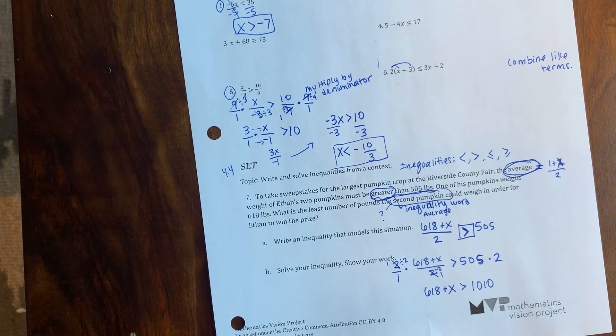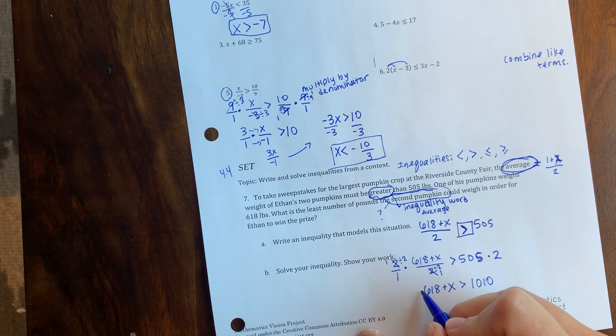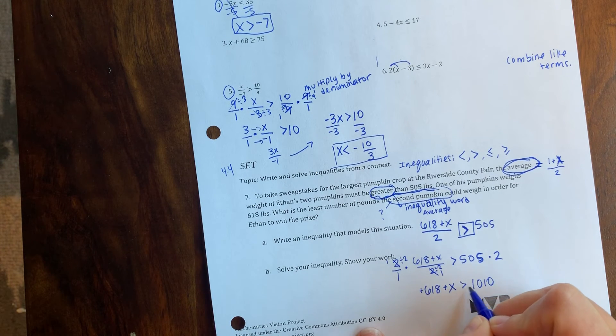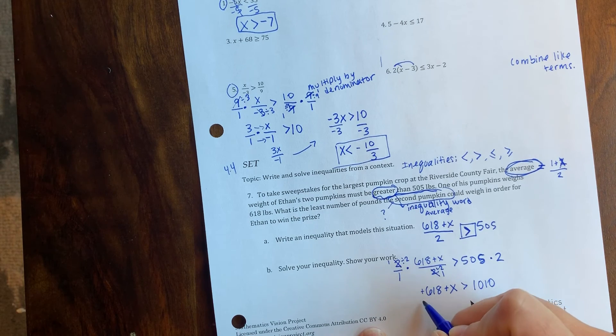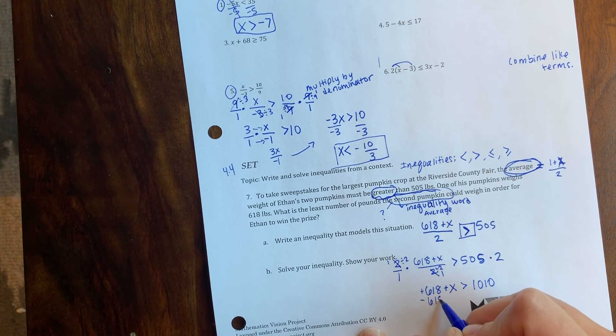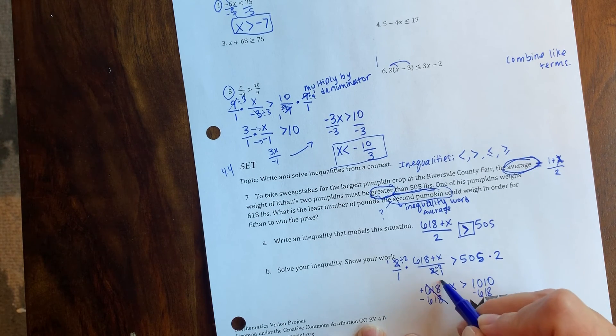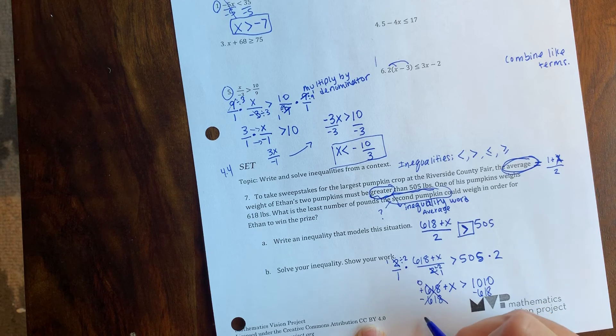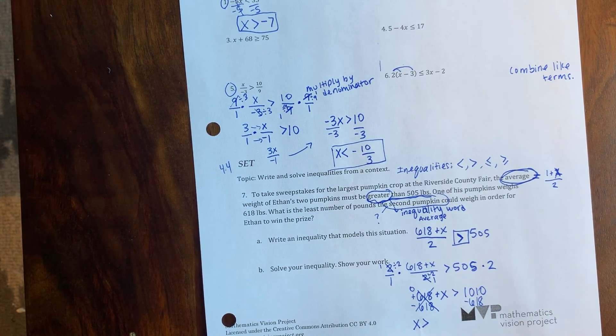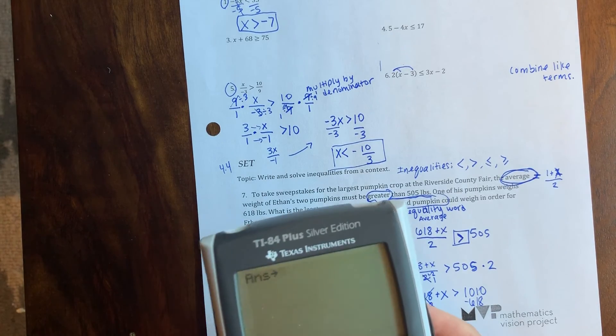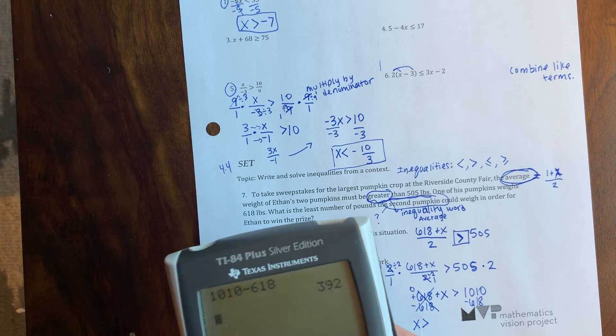So here I have a positive 618 plus x. The opposite of adding 618 would be subtracting, so I need to subtract that 618 on both sides and there I'm just going to get zero. And I have x needs to be greater than... let's see, 1010 minus 618... 392.